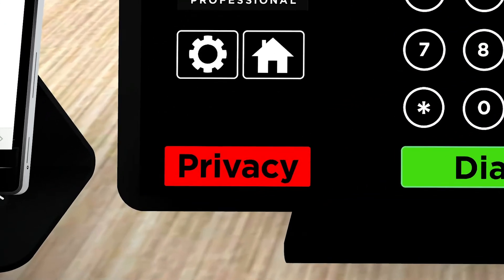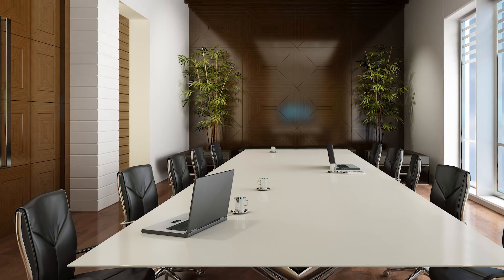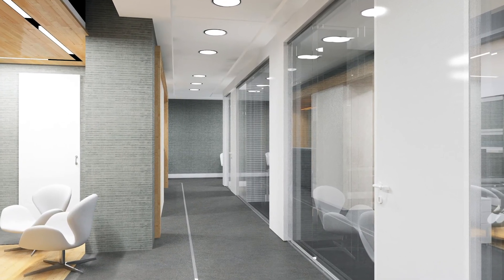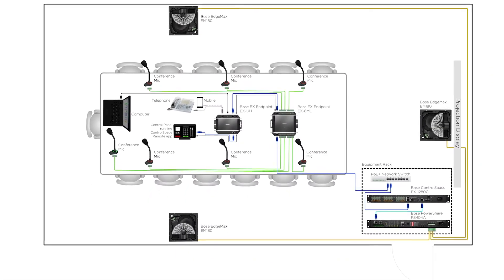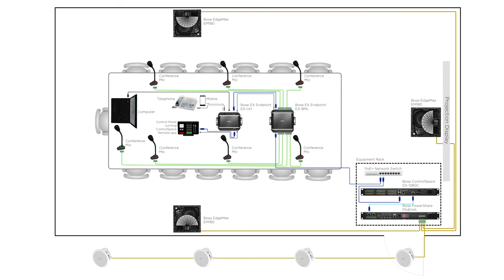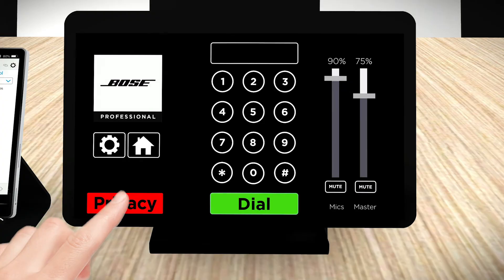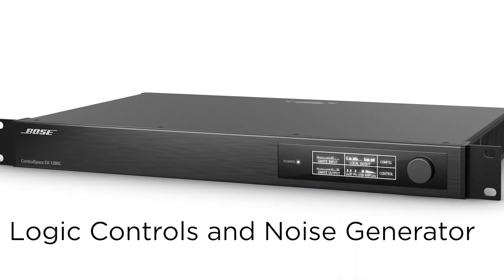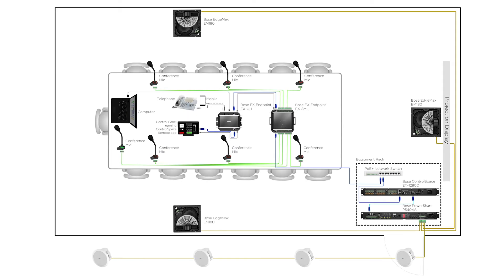One last innovation is privacy mode for conferencing rooms requiring that conversations inside the room not be intelligible in adjacent areas such as hallways, seating areas, or offices. Perimeter loudspeakers such as FreeSpace can be easily installed and powered from the fourth amplifier channel. By a click of the privacy button on the tablet, the EX1280C processor's logic controls can engage an internal noise generator and turn on noise masking into the perimeter areas. Now your meetings will be more private. Once the meeting is finished, you can easily turn it off.